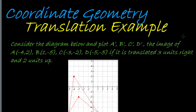For example, we're looking at translations. We are told to consider the diagram below and plot the point A', B', C', D' - the image of - and then they give us the coordinates for A, B, C, and D.